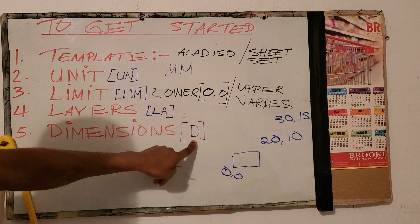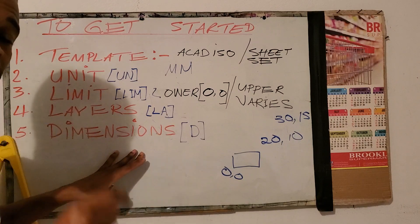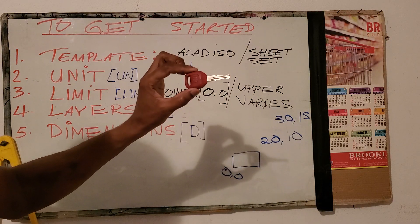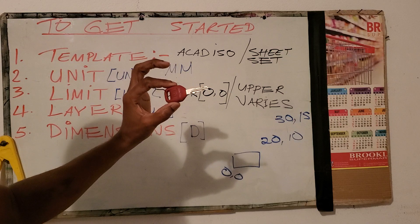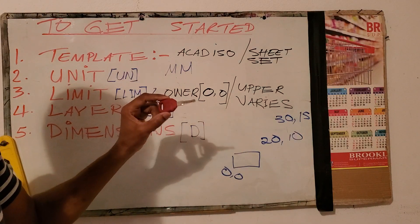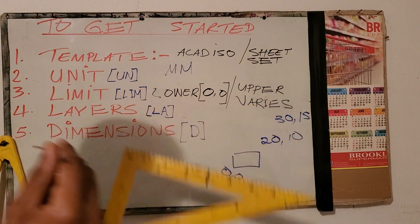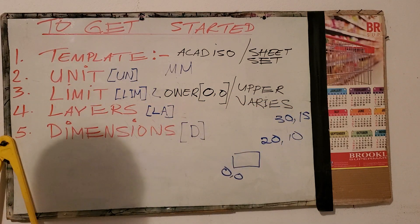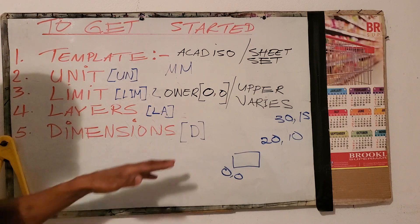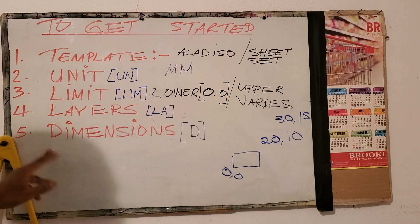Dimension. The shortcut key for dimension is D. The dimension settings we use are relative to the size of the figure — for example, a smaller drawing would need smaller arrow sizes, smaller offset from origin, and smaller text. As opposed to a larger object. In my subsequent video I will expand on that. If you like this video, please like, subscribe, and click the link. There are videos on templates, unit, limit, layers, and dimension — please watch those.